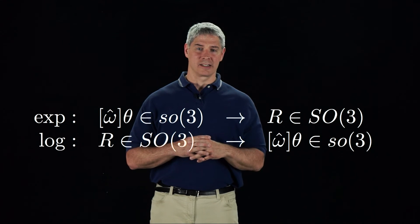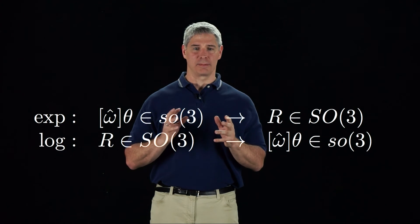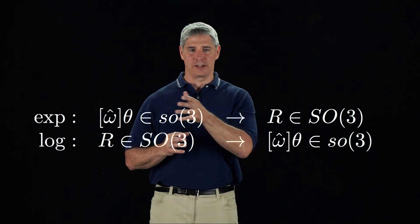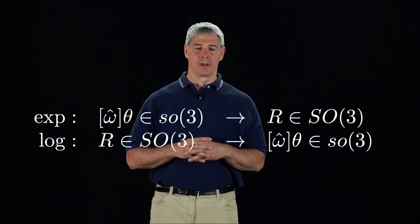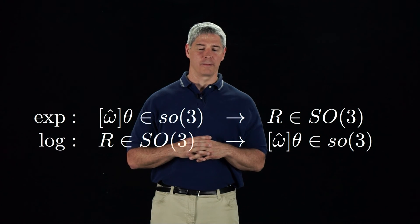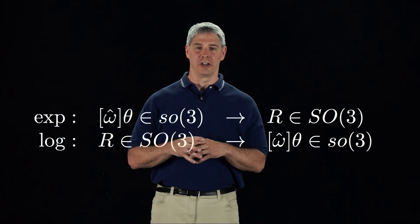Before we get to robot kinematics, though, we have to generalize the matrix exponential and log to cases where frames both rotate and translate. In other words, general rigid body motion. We'll start the process of generalizing from rotations to general rigid body motions in the next video.